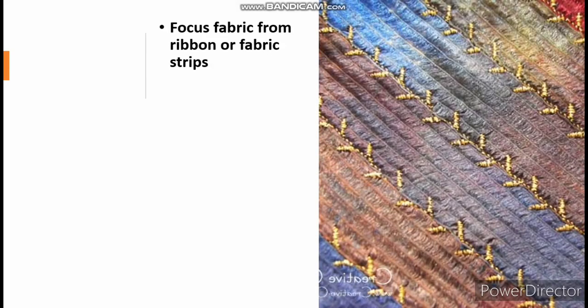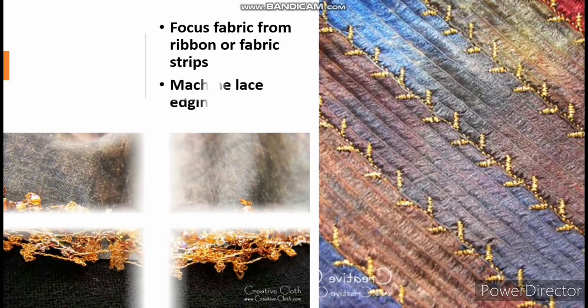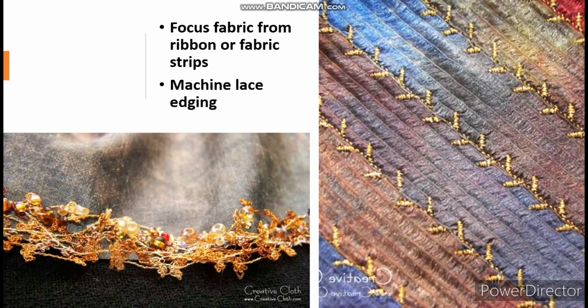Another use of decorative stitches is with ribbon or fabric strips. You can do this by placing strips of ribbon or fabric side by side on some interfacing and using a decorative stitch to sew the strips together, as you can see from the image. You can also use decorative stitches to make a nice machine lace and to finish edges and trimming.